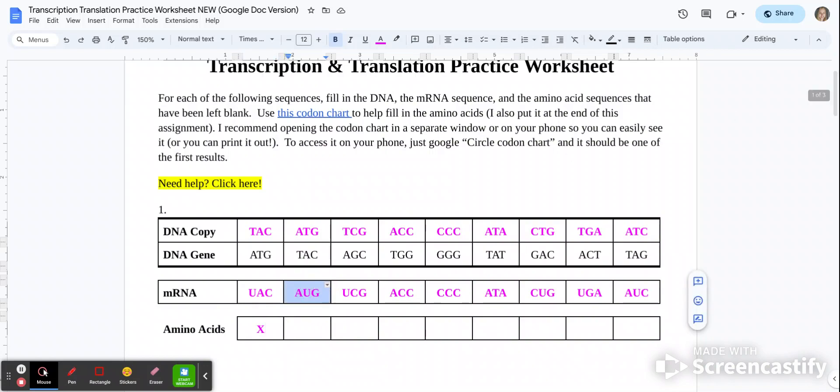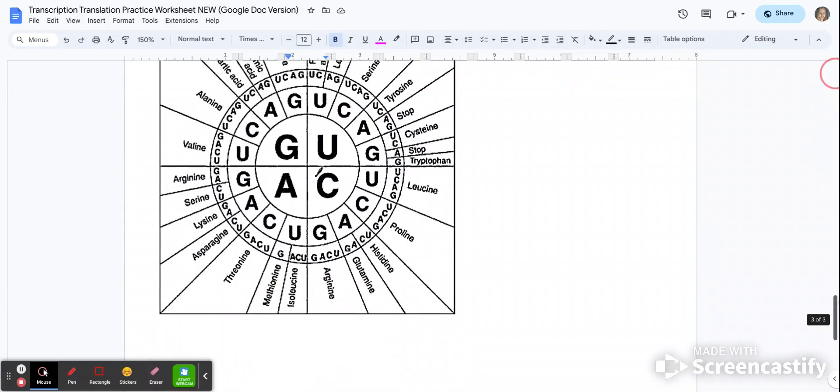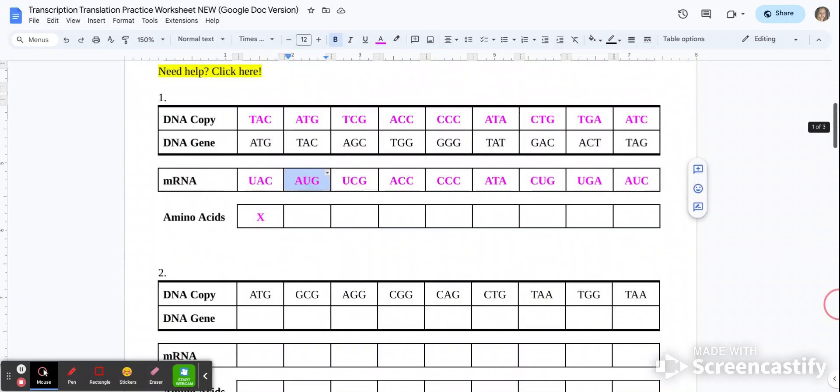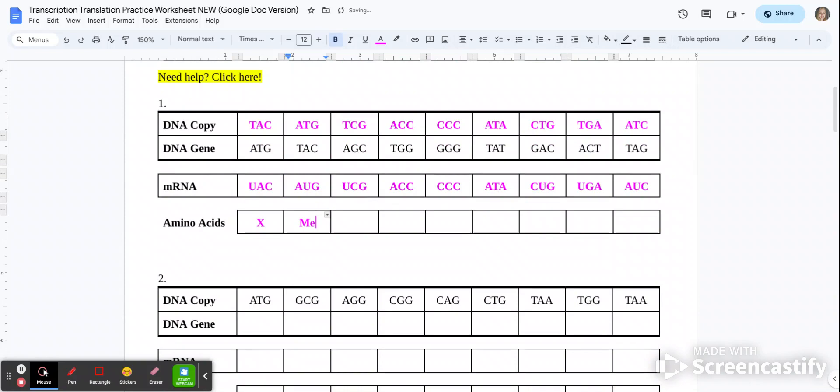If you remember, AUG codes for methionine. At the bottom here, I have a codon chart. So we go AUG, we see it codes for methionine. So when I go back up here, we're going to go ahead, I'm just going to abbreviate. We can abbreviate using the first three letters. So we can write M-E-T for methionine.